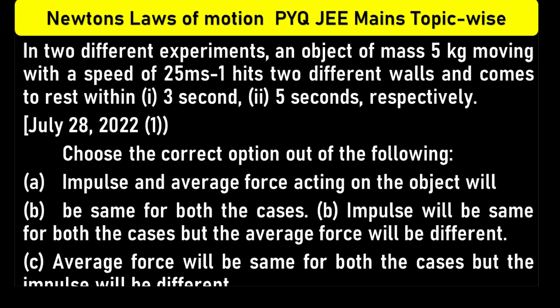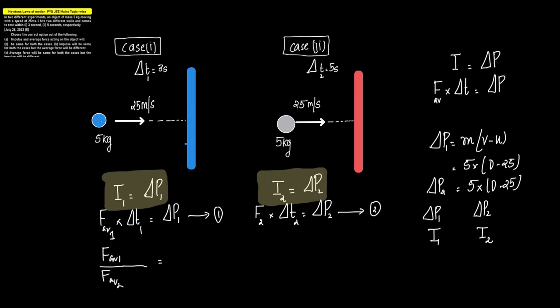First we will try to visualize this and then understand the concept. We have two cases: Case 1 is a 5 kg mass and Case 2 is also a 5 kg mass, both with the same velocity — a speed of 25 m/s — hitting wall 1 and wall 2 respectively.